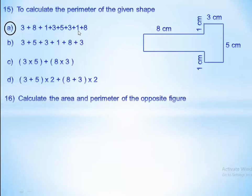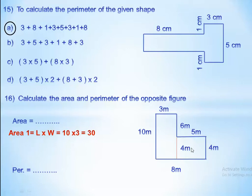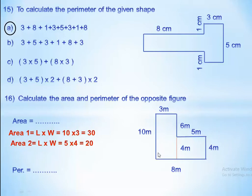Calculate the area and perimeter of the complex shape. First step: draw a line to divide the shape into two rectangles. For area of rectangle 1: length times width equals 10 times 3 equals 30. For area of rectangle 2: we know one side is 10, and since the total opposite side is 6, the remaining side is 10 minus 6 equals 4. So area 2 equals 5 times 4.